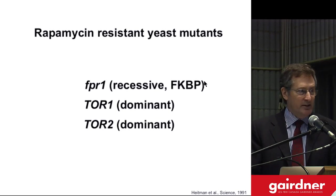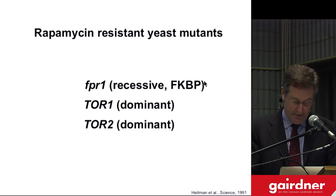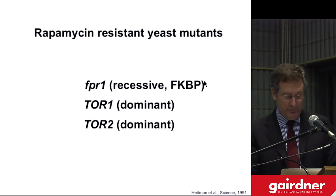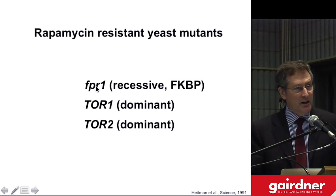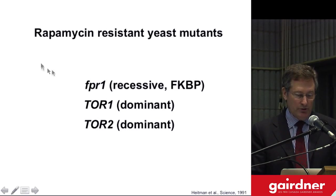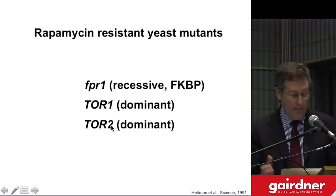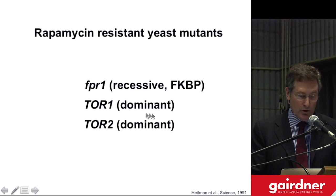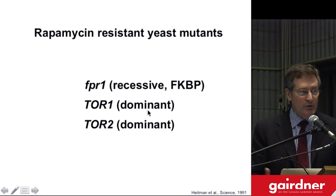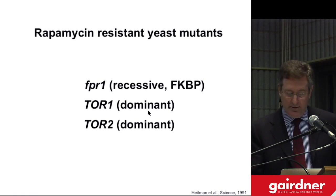This gave us the advantage in the competitive area of identifying the mechanism of action of rapamycin. When Joe selected rapamycin-resistant yeast mutants, he obtained mutants defective in any one of three different genes. The majority of mutations were recessive in a gene called FPR1, which encodes a protein called FKBP. In addition, we had mutations in two other genes which we called TOR1 and TOR2, for target of rapamycin — we didn't know what they encoded. These mutations were extremely rare and dominant. Why were some common and recessive and some very rare and dominant? Back in 1990 we didn't know, but we now do — it relates to the mechanism of action of rapamycin.